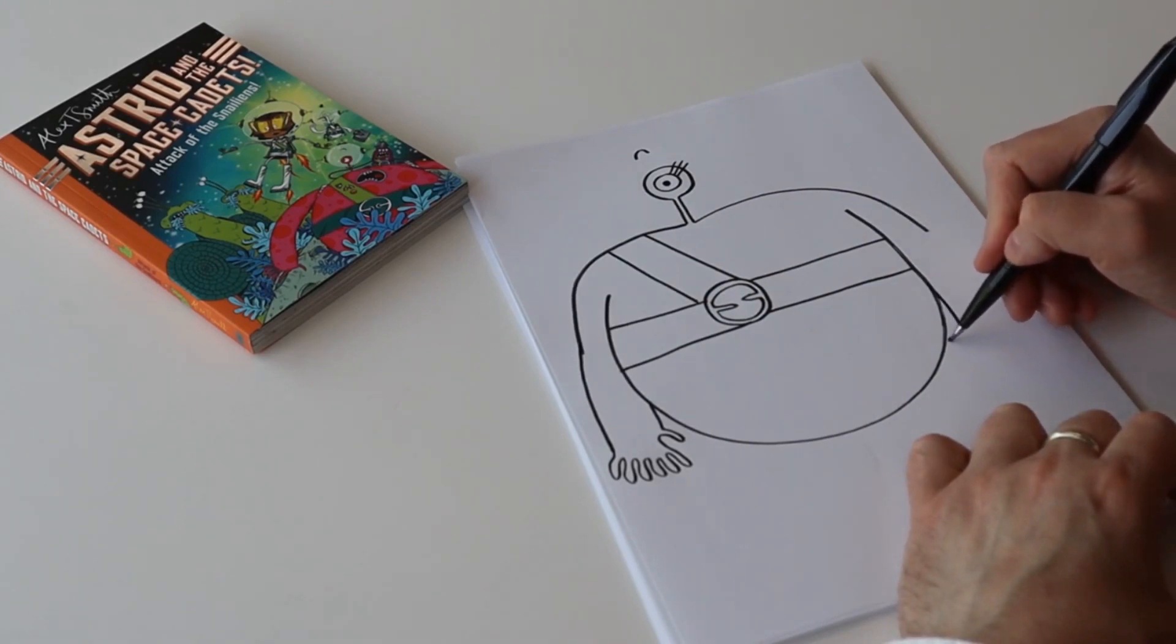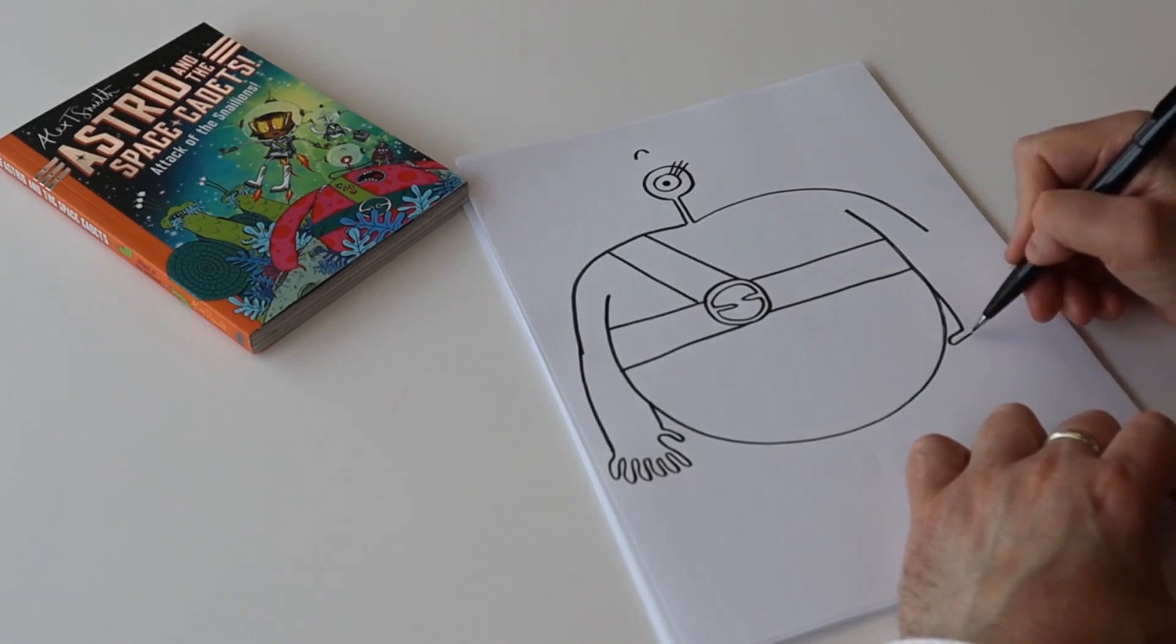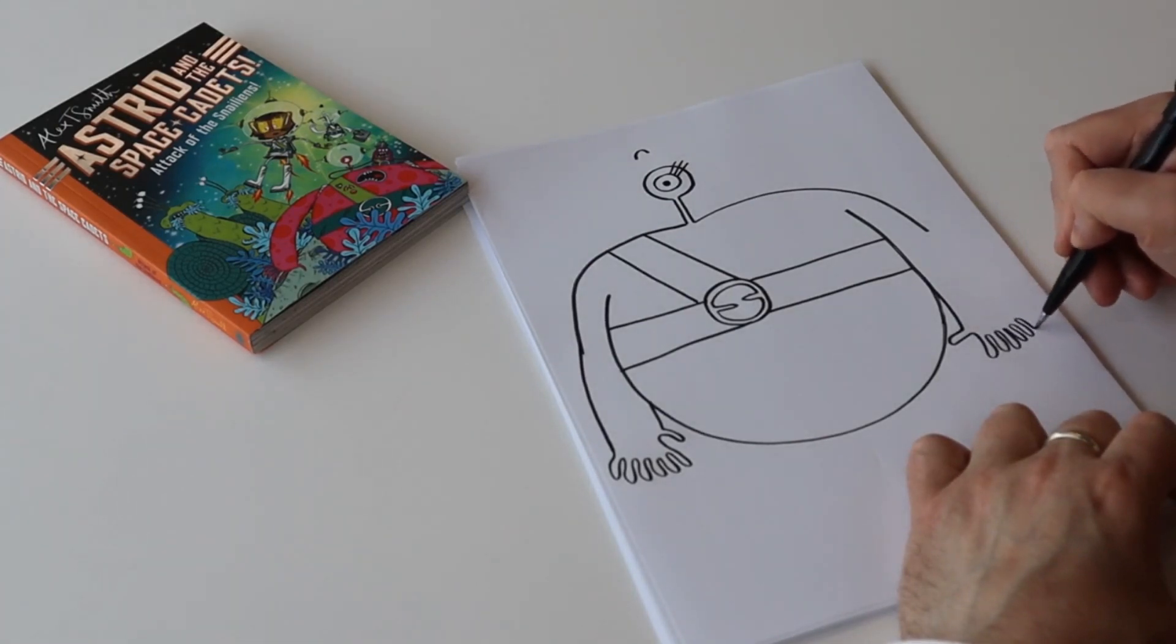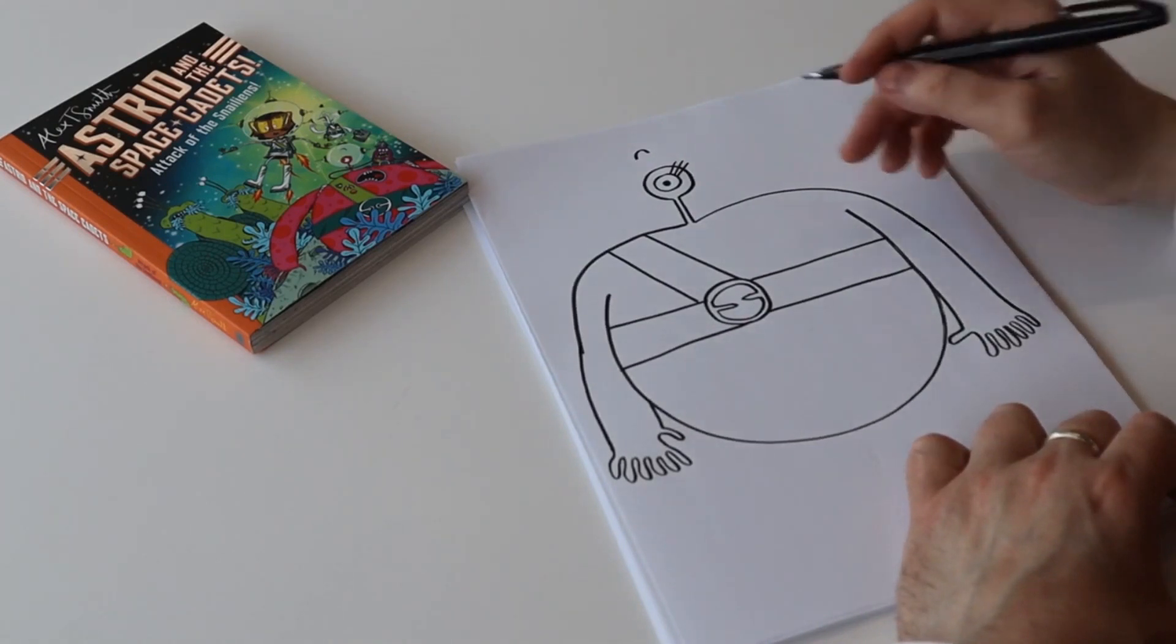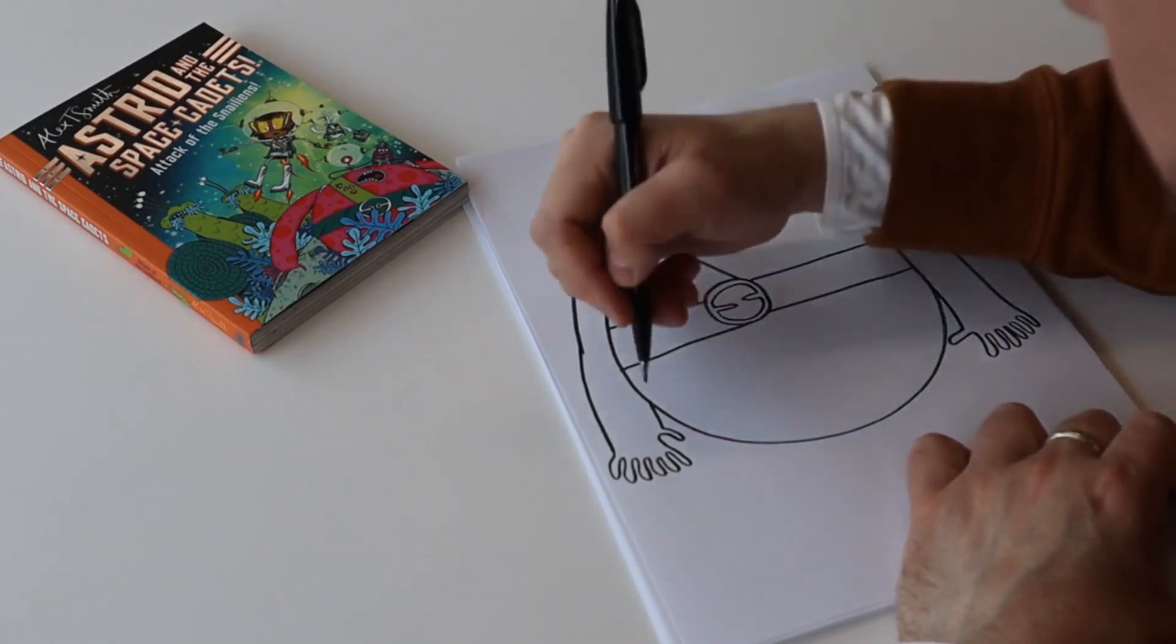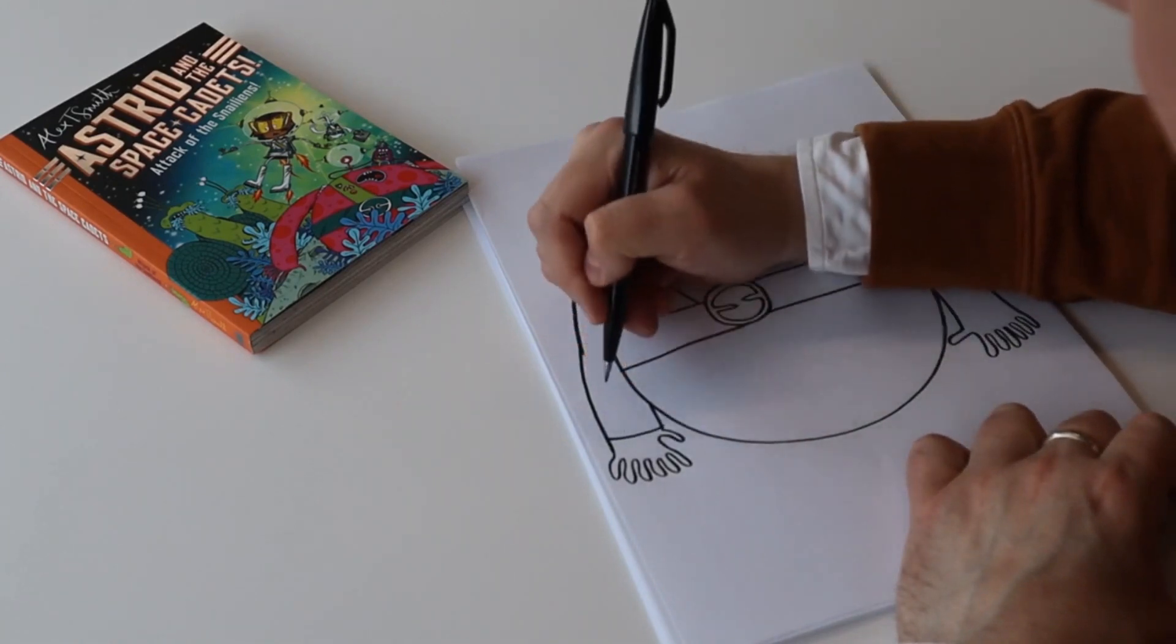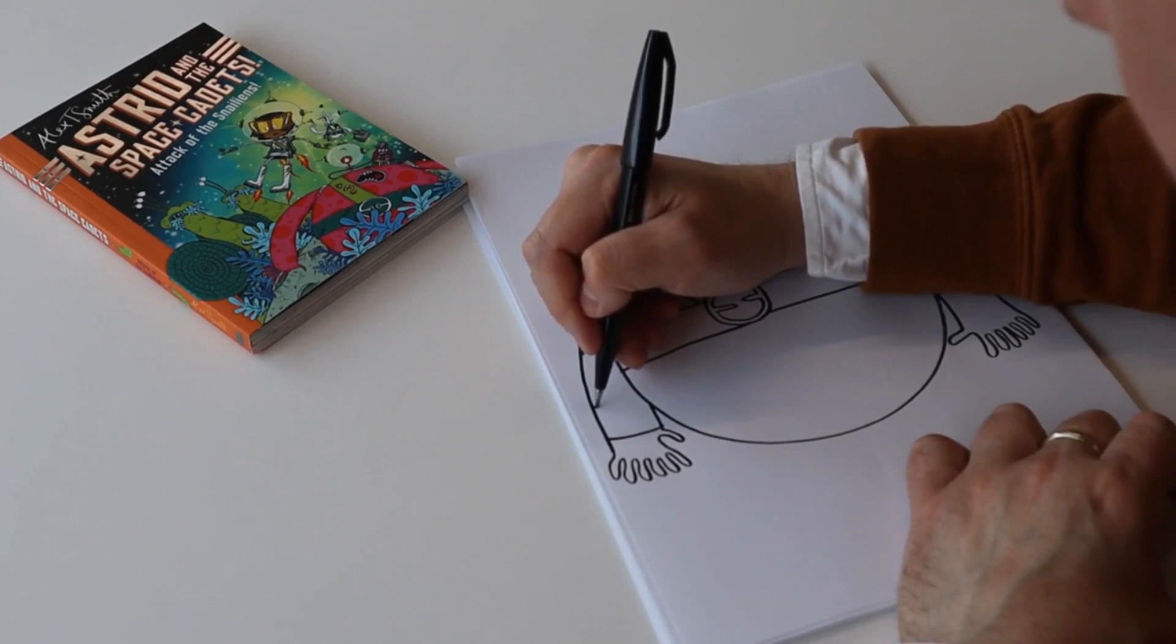We'll do the same on this side. We go down but we draw the thumb first this time, and then we do her fingers—one, two, three, four, five, six—and join up her arm there. Now in the book she has what's called a wrist bleeper, a way that she can communicate with her friends.